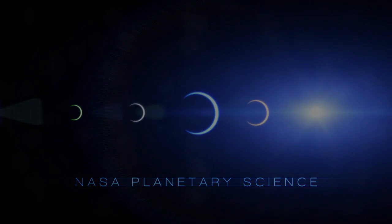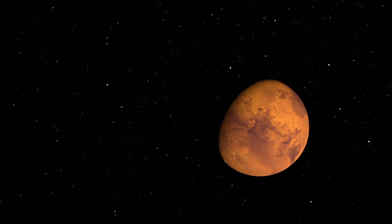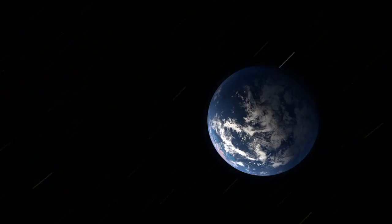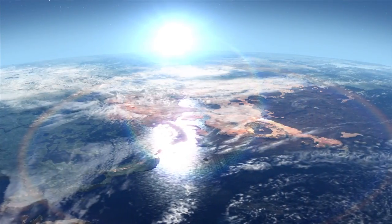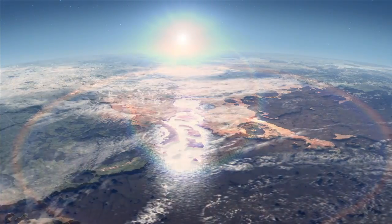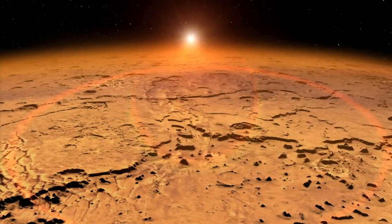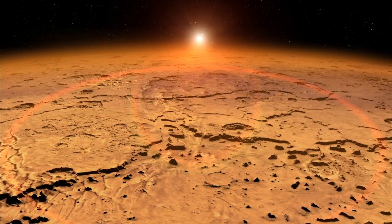So a real outstanding question is, what was the early atmosphere of Mars like, and for how long did it last? And did the conditions on Mars early on that might have been favorable for life persist for hundreds of millions of years, for tens of millions of years, or how long exactly did they persist?